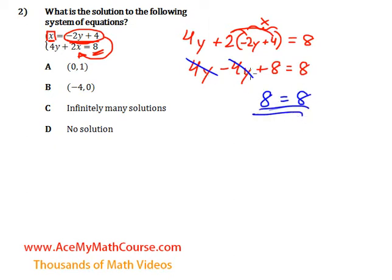But the variables got cancelled out. What does this mean then? When we get rid of the variables by solving a system of equations and we end up with the truth, 8 equals 8 is the truth. We actually have infinitely many solutions because this means that these two equations are actually equivalent. So they coincide, meaning that if we were to rewrite each equation in y equals mx plus b format, we would end up with the same thing.